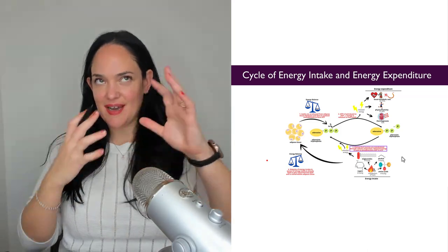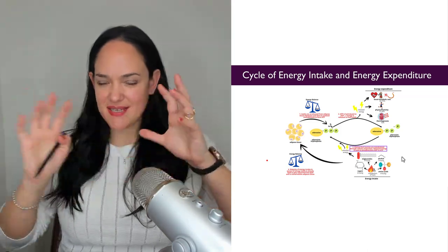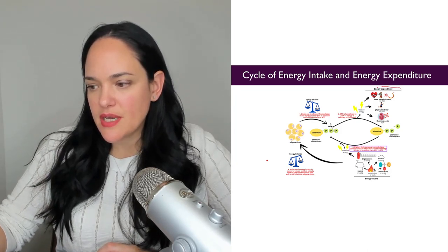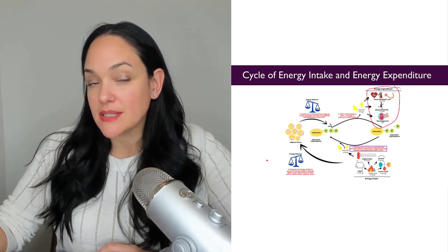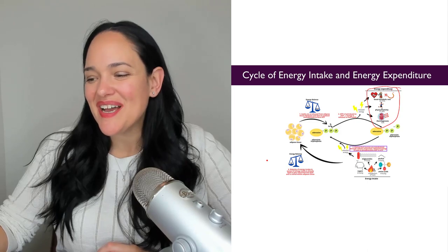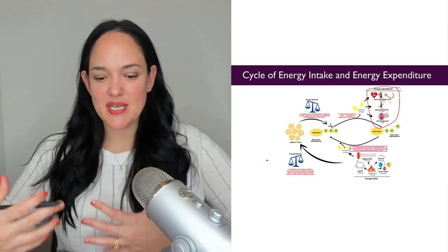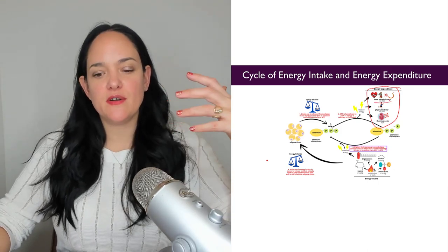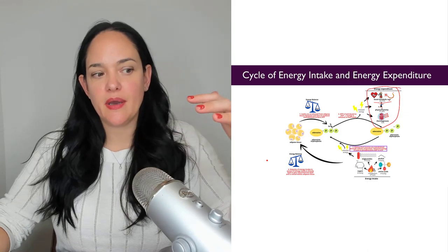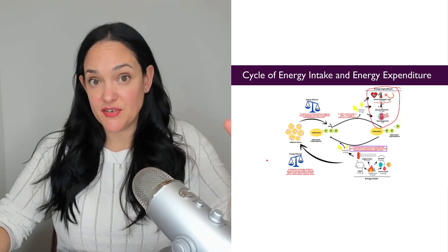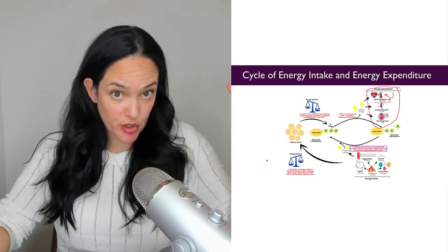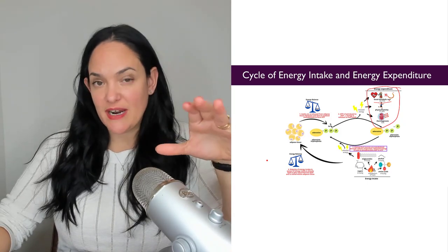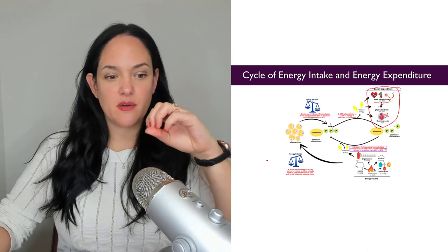But just to refresh our memories on how energy balance works, remember that the three main things, we're going to further subdivide them in a second, but the three main things that we use energy for in the body is our basal metabolism. So this is the amount of energy needed to basically keep our really fundamental body processes working, when we're not doing anything, when we're just lying down, essentially resting.